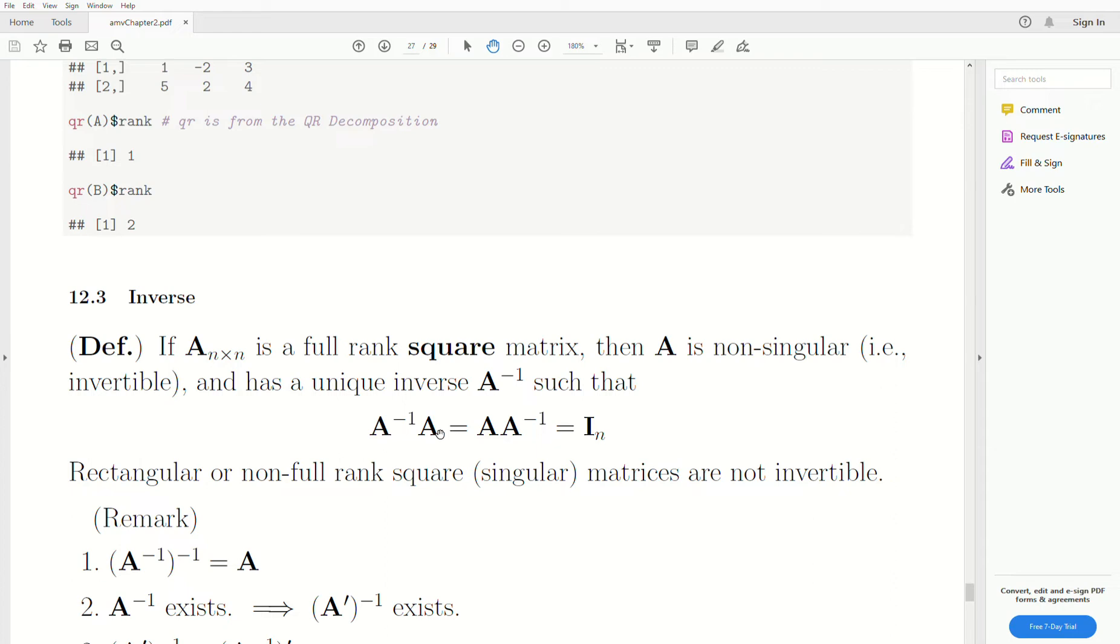So the matrix product, A inverse A, produces the identity matrix. But it's also the other way, A times A inverse produces the identity matrix.